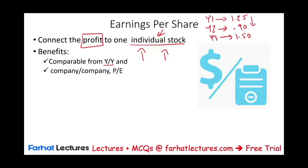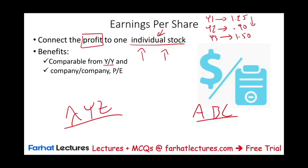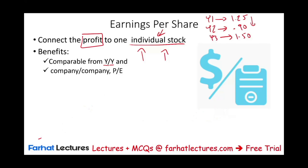You could have a large company, XYZ, one of the largest companies, and you can have ABC, a medium or small company. It doesn't matter how large their income or how large the company is. Once you compute EPS, because you're comparing one share to one share, both EPSs are comparable. So it allows you to compare across companies.